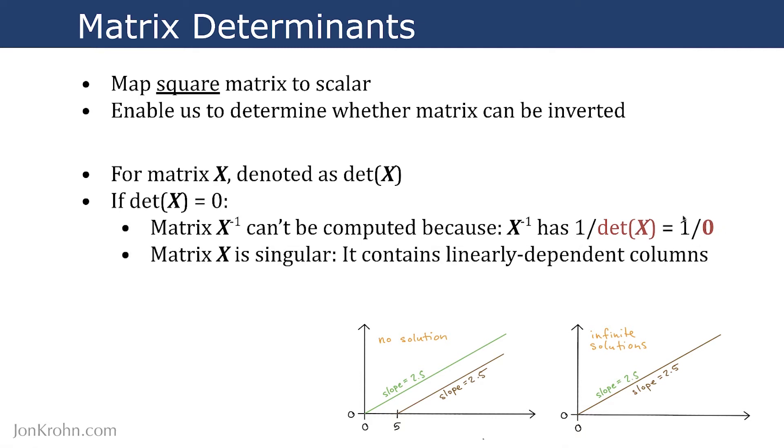And so as I already mentioned, this indicates that the matrix X, while square, suggesting it might be invertible, is in fact singular. It contains linearly dependent columns. We either have this situation here or this situation here, meaning that our square matrix cannot be inverted.